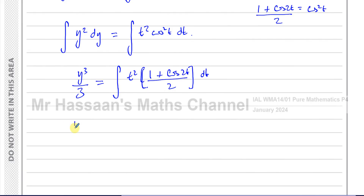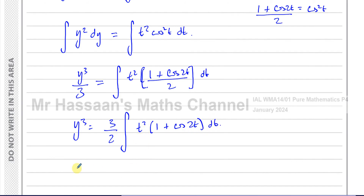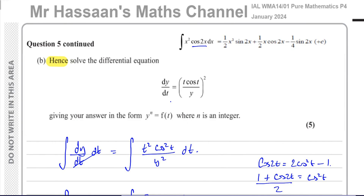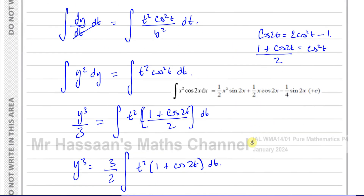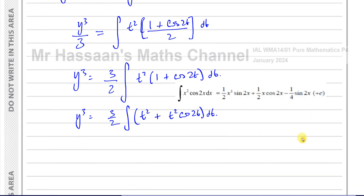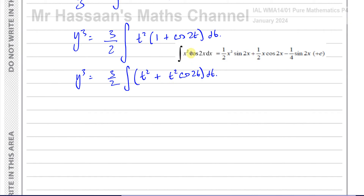Multiplying through: y³ = (3/2) × integral of (t² + t² cos 2t) with respect to t. The first part, t², integrates straightforwardly to t³/3. For the second part, t² cos 2t, this is exactly our result from part A — it's the same as x² cos 2x with x replaced by t. So I can use that result directly.